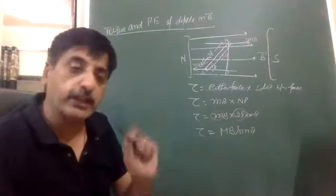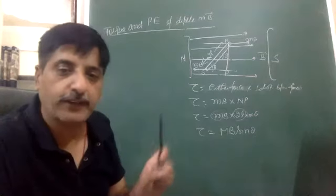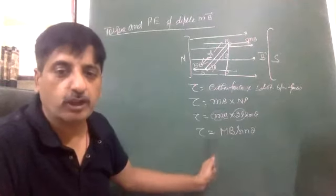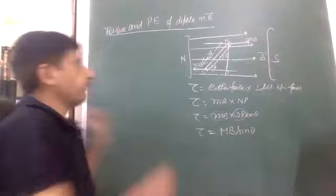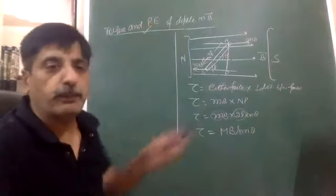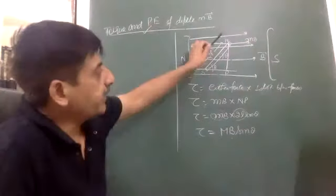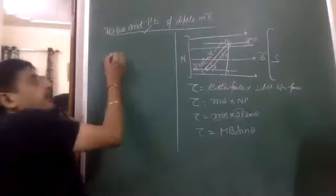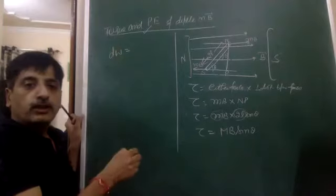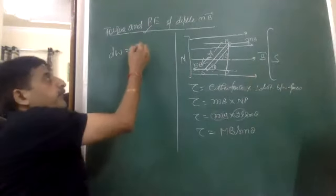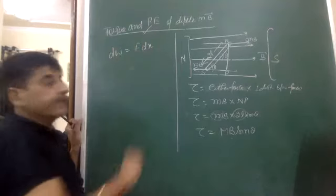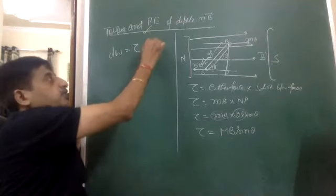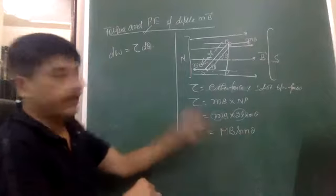Just as in the electric field case: if theta is 0 or 180 degrees, the torque is zero. If theta is 90 degrees, the torque is maximum. Moving to the second part — potential energy of the dipole — when torque acts, the dipole starts to rotate. Work done in rotating the dipole is given by torque times angular displacement: dW = tau d-theta = MB sin theta d-theta.